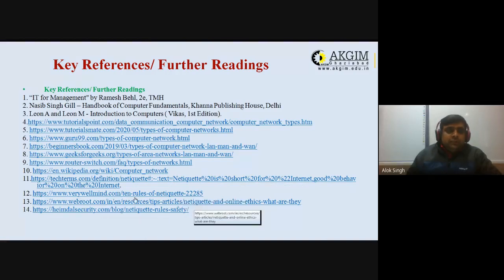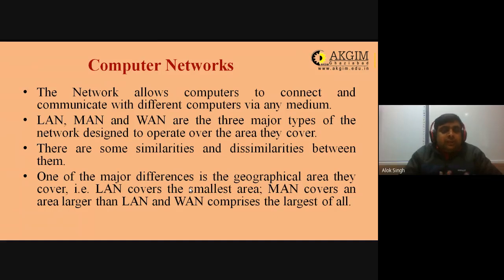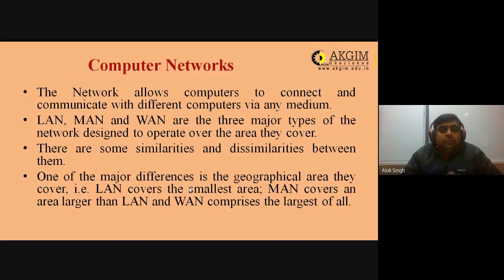First, we will discuss what a computer network is. The network allows computers to connect and communicate with different computers via any medium. There are two ways a computer connects via a network: one way is through towers that send Wi-Fi signals, and the other is through optical fiber cables. So the network allows computers to connect and communicate with different computers via any medium.